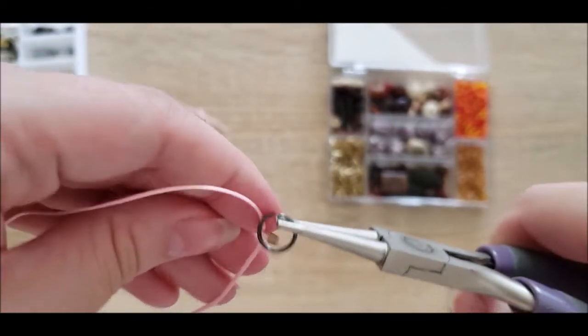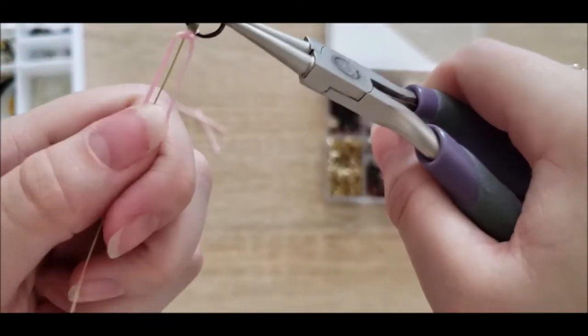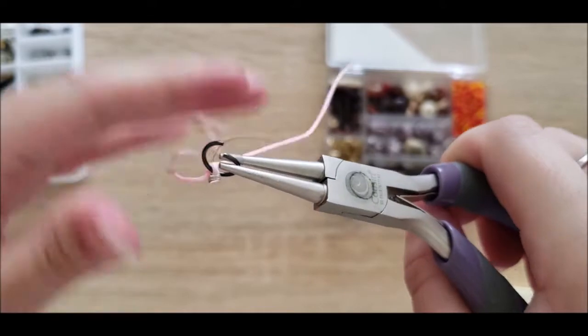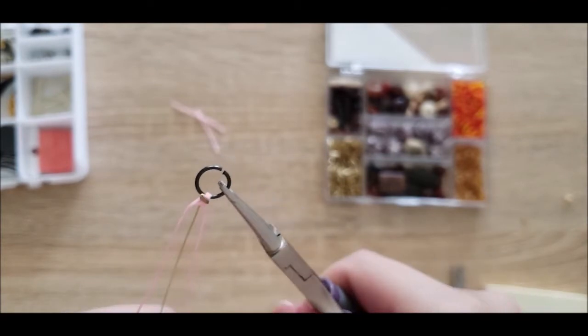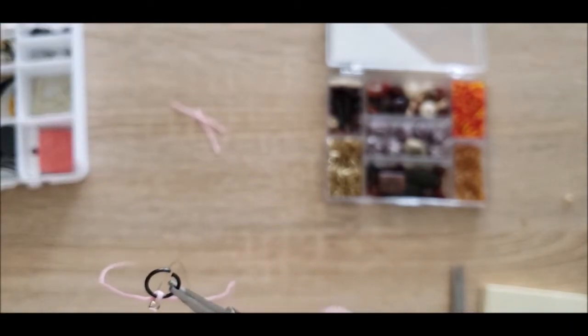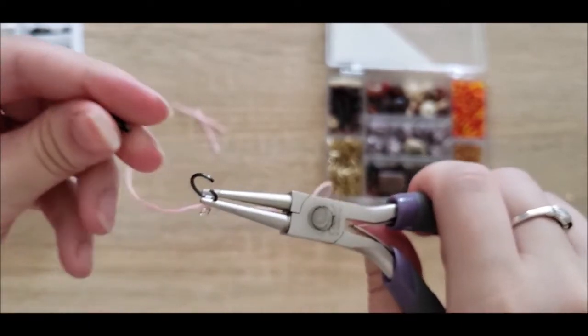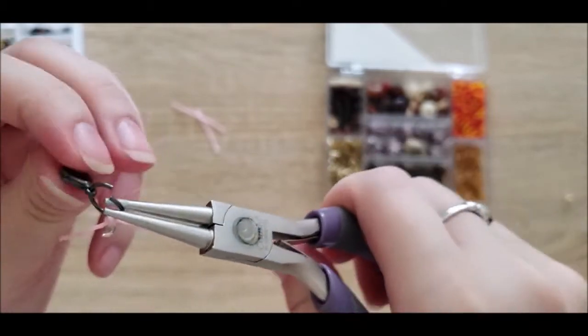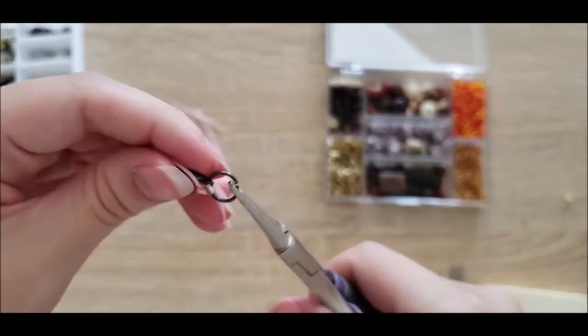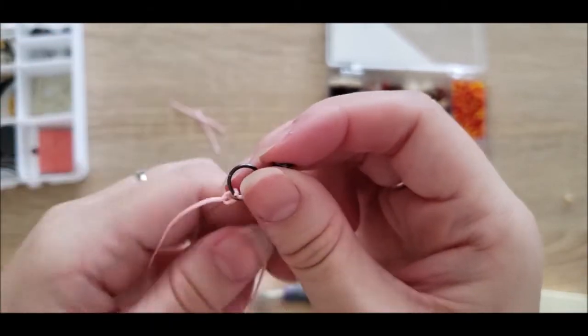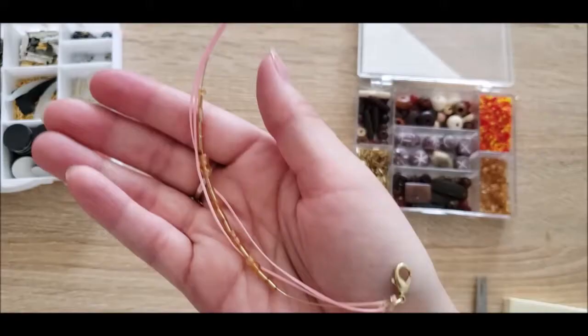That will be one side. Now for the other side you will add your jump ring again and this time you will grab a lobster clasp, leave it open and you will drop your clasp in there just like that and close it back up nice and tight so that nothing falls out. Once you do this on both sides you should be able to have a fully functioning bracelet.